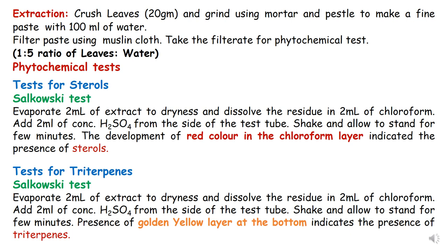For the test for triterpenes, the procedure is the same as for sterols. The only difference is the color: if you get a golden yellow color at the bottom, it indicates the presence of triterpenes. So in Salkovski's test, red color indicates sterols and golden yellow color indicates triterpenes.